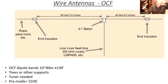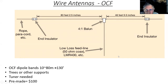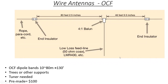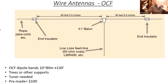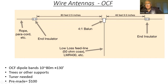The majority of hams who operate 17 and 12 meters do not run beams, and that's why it's a band I recommend. The point is you always want to operate as close to the maximum usable frequency as possible. So when 20 meters is open, there are times 15 is dead yet 17 is wide open. The other benefit of the WARC bands is that you will not find contests going on on those bands.